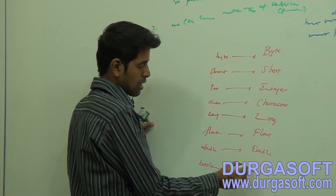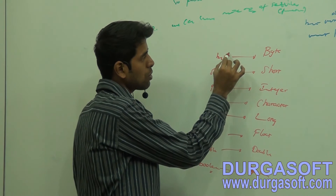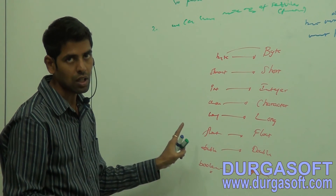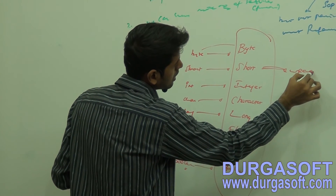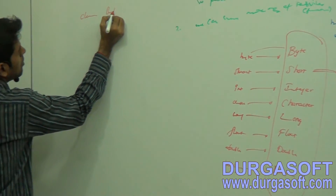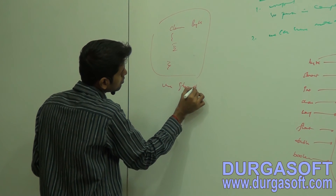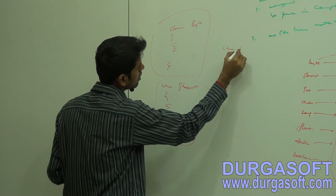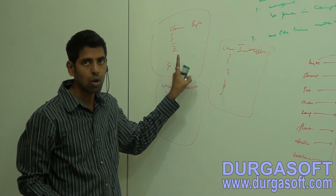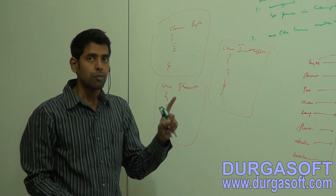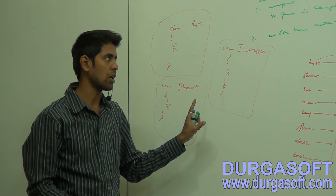The corresponding class for boolean is Boolean (capital B). So all these corresponding classes for each and every primitive data type together are called wrapper classes. The class Byte has been provided by Sun Microsystem, Short by Sun Microsystem, Integer by Sun Microsystem - and they all have lots of implementations internally, which we are going to learn.